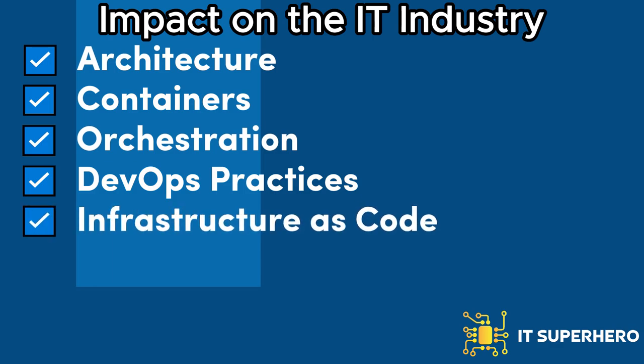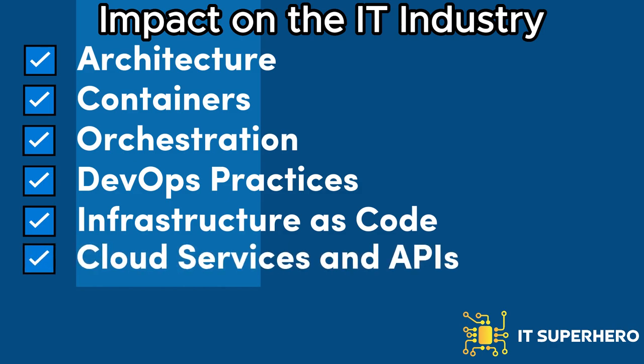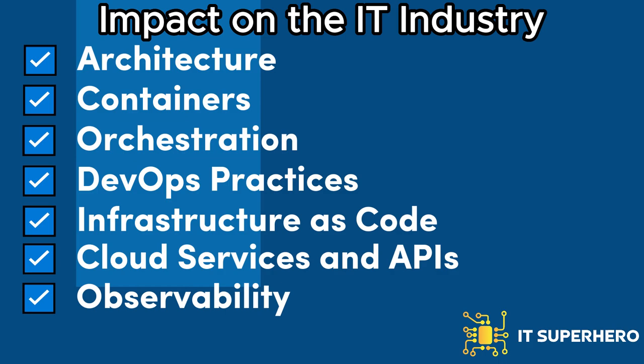Infrastructure as Code: infrastructure provisioning and management are automated using declarative code, known as Infrastructure as Code, with tools like Terraform and CloudFormation. Cloud-native apps leverage cloud services and APIs extensively, taking advantage of managed services provided by cloud providers to enhance functionality and reduce infrastructure management overhead. Observability is prioritized through logging, metrics, and tracing mechanisms to gain insights into application performance, troubleshoot issues, and optimize resource utilization.